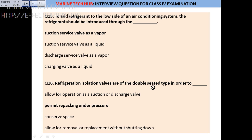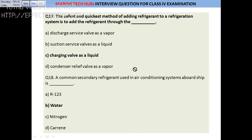Question 16: Refrigerant isolation valves are of a double-seated type just to permit repacking under pressure. This is a very important question that you may get wrong — remember that the double-seated type permits repacking under pressure.